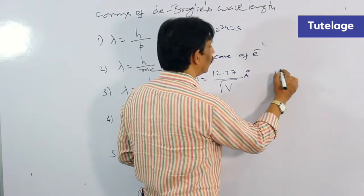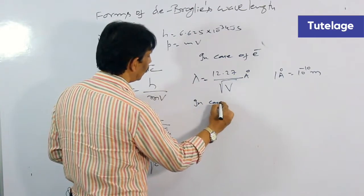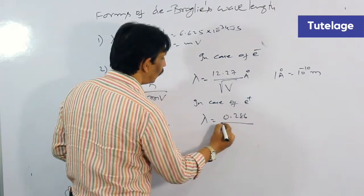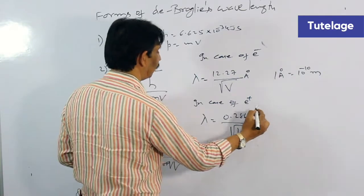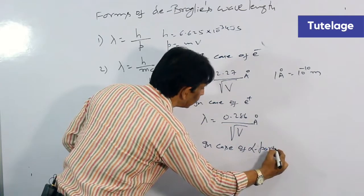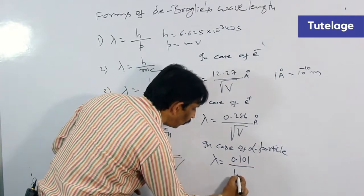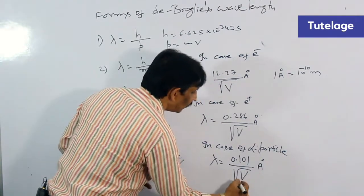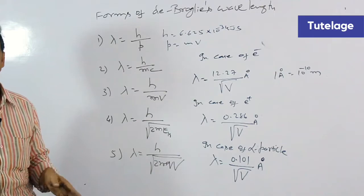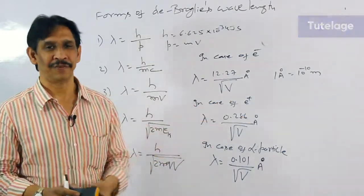Note that 1 angstrom is equal to 10⁻¹⁰ meters. In case of a proton, which is a positively charged particle, lambda is equal to 0.286 divided by the square root of V angstroms. In case of an alpha particle, lambda is equal to 0.101 divided by the square root of V angstroms, where V is the potential difference. Using this shortcut method, we can directly substitute the value of potential difference and get lambda in angstroms.